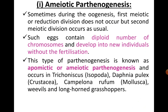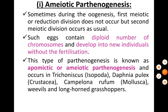In apomictic or ameiotic Parthenogenesis, during oogenesis the first meiotic or reduction division does not occur, but the second meiotic division occurs as usual. Such eggs contain the diploid number of chromosomes and develop into new individuals without fertilization. This type is seen in isopods, mollusks, and other species.